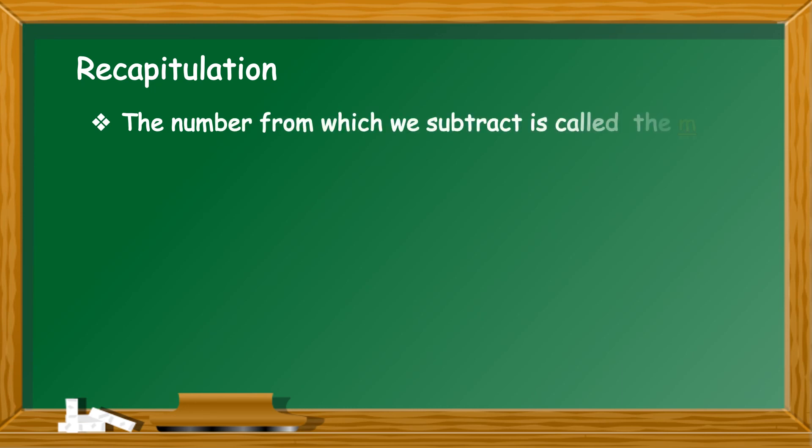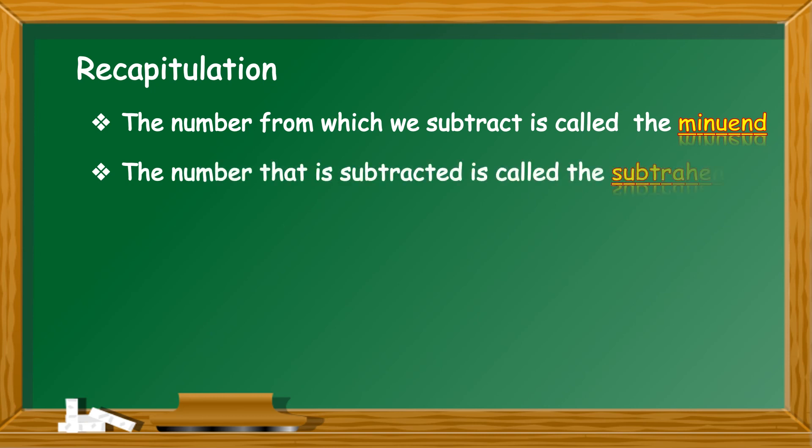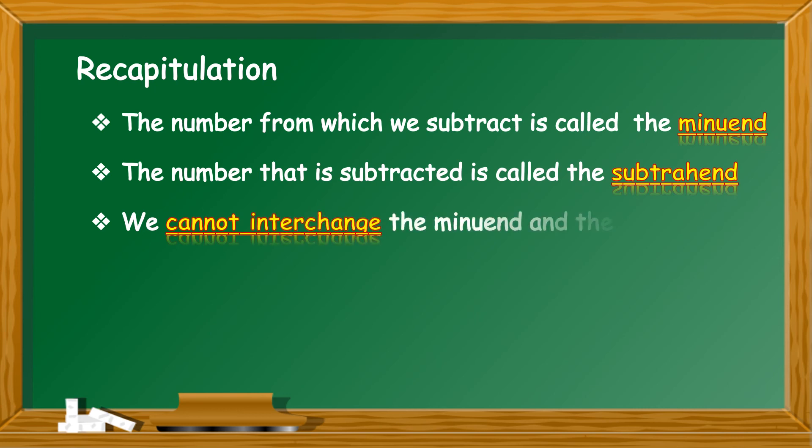A quick recapitulation before we end. The number from which we subtract is called the minuend. The number that is subtracted is called the subtrahend. We cannot interchange the minuend and the subtrahend.